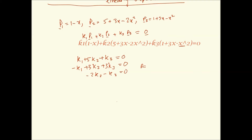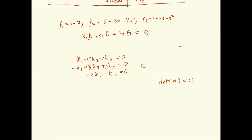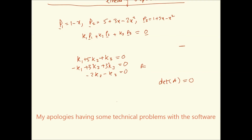We come to the same situation as before. If the determinant of A equals zero, it turns out it is indeed zero, so we say that the set {P1, P2, P3} is linearly dependent.